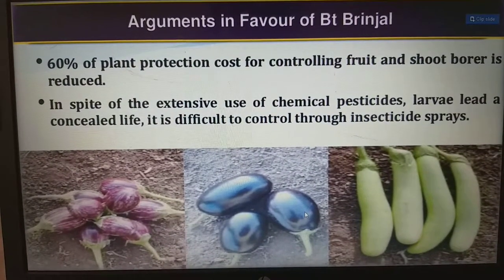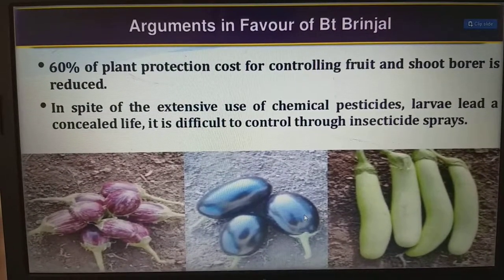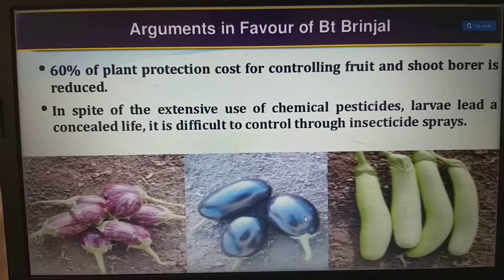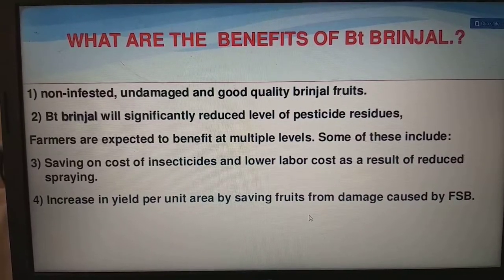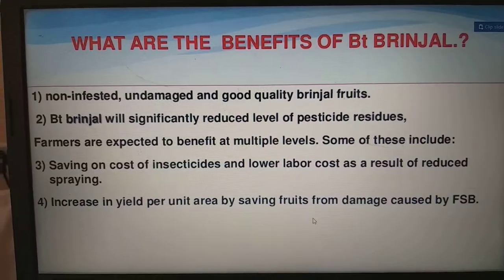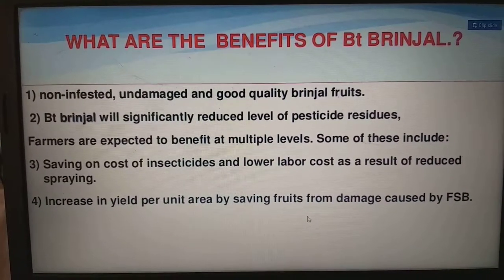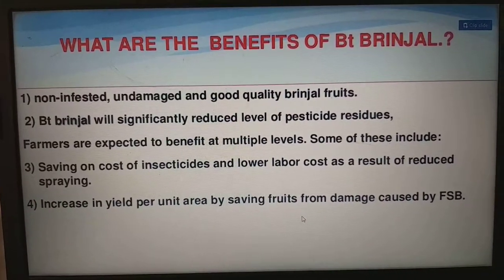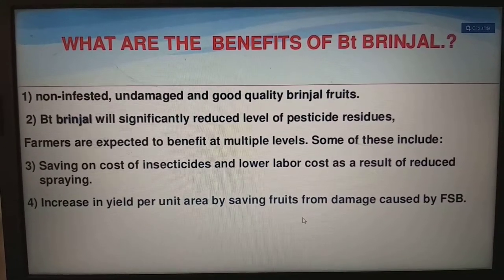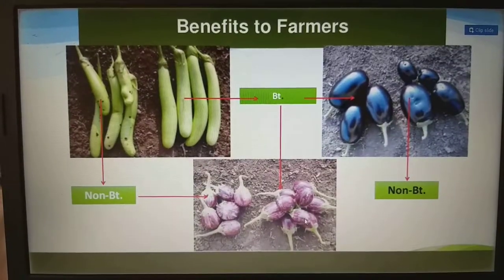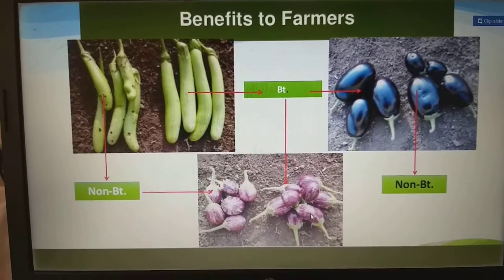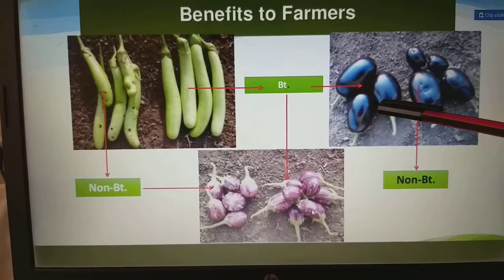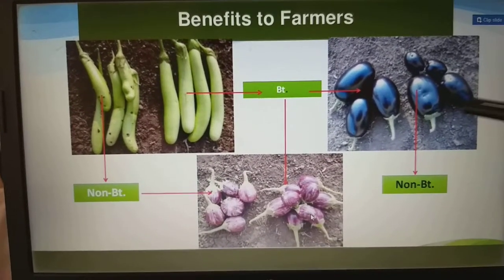Arguments in favor of Bt brinjal: 60% of plant protection cost for controlling the fruit and shoot borer is reduced. In spite of extensive use of chemical pesticides, larvae lead a concealed life, making insecticide sprays difficult to control. The benefits include non-infested, undamaged, good-quality brinjal fruits, significantly reduced pesticide residues, and multiple-level benefits to farmers including savings on insecticides and lower labor cost from reduced spraying, and increased yield per unit area. You can visually compare non-Bt and Bt brinjal fruits to see the clear differences in quality.